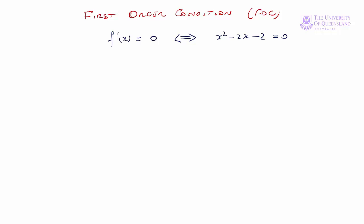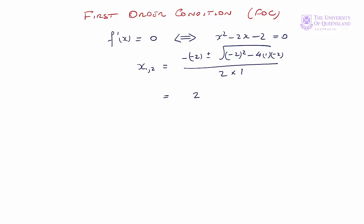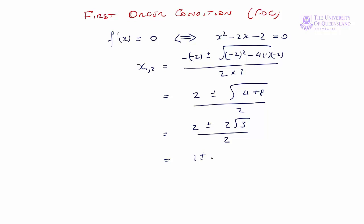We apply the quadratic formula to find the roots. x₁,₂ will equal minus minus 2, plus or minus the square root of minus 2 squared minus 4 times 1 times minus 2, over 2 times 1. That's 2 plus or minus the square root of 4 plus 8 on 2, or 2 plus or minus — well, 12 is 4 times 3 so that'll be 2 times the square root of 3 on 2 — and we can divide through by 2, so that'll be 1 plus or minus the square root of 3. Our roots are x₁ equals 1 minus the square root of 3, and x₂ equals 1 plus the square root of 3.